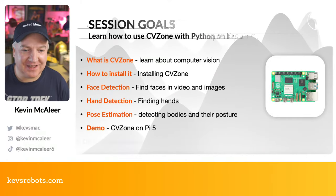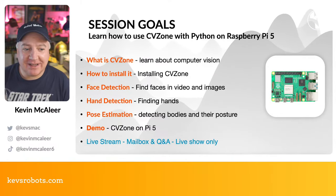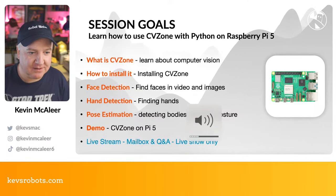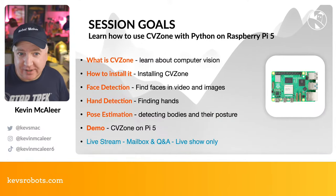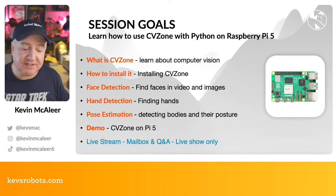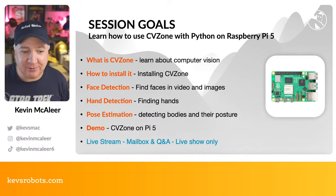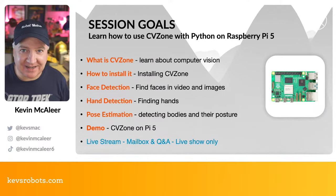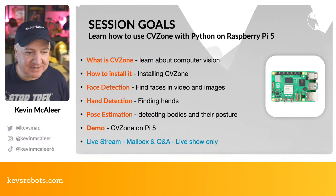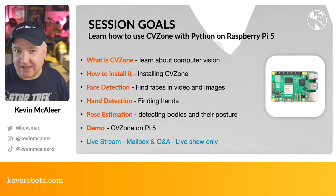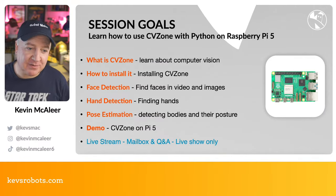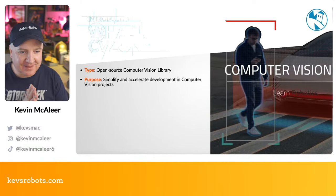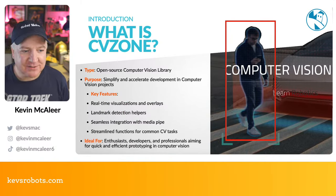Comment below if you know who that is and why it's significant. Today we're going to be learning about how to use CVZone and Python on the Raspberry Pi 5. We're going to look at how to install it very quickly, how to find faces in images and video, how to find hands in video, and also how to detect body posture - something like the Kinect sensor for the Xbox 360, but in software.